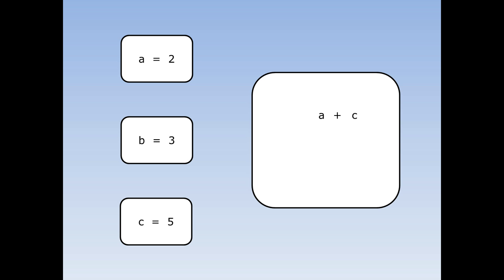a is 2, b is 3 and c is 5. What's a plus c? We swap a for a 2 and c for a 5. 2 plus 5 is 7, so a plus c equals 7.